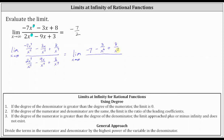In the denominator, two x to the seventh divided by x to the seventh is two, minus nine x divided by x to the seventh is nine divided by x to the sixth, plus three divided by x to the seventh doesn't simplify.